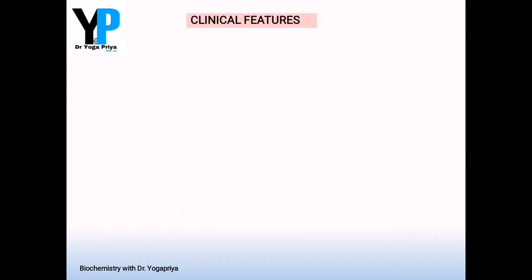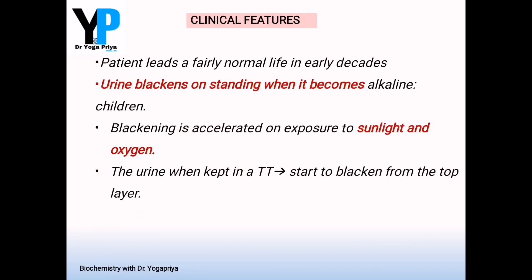Regarding clinical features of alkaptonuria, these patients lead a normal life in their early decades and all clinical manifestations set in only in their 30s and 40s. The only manifestation seen in children is blackening or darkening of urine. When the collected urine sample is allowed to stand for some time, the urine turns alkaline, which is the main reason for this darkening. Triggering factors include exposure to sunlight and reaction with atmospheric oxygen. Immediately after collecting the urine sample it appears normal, but within a few minutes the reaction sets in and within a few hours complete darkening of urine is seen.